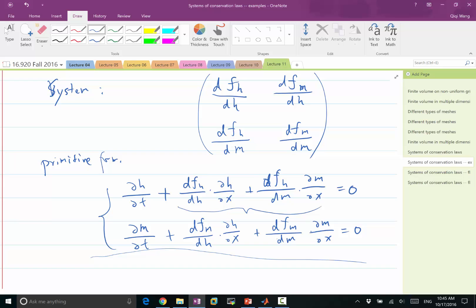And how do you decouple them? By diagonalizing this matrix, right? So remember, we have these four numbers that forms a matrix. If we can perform eigenvalue analysis to this matrix, the eigenvalues are going to be the characteristic speeds.